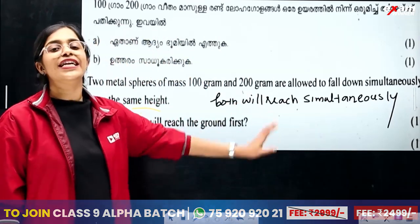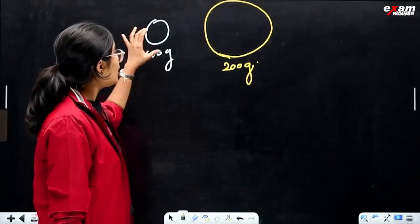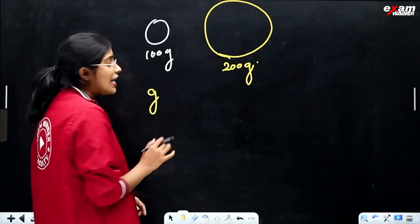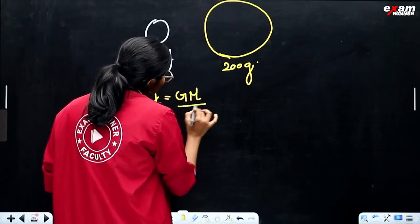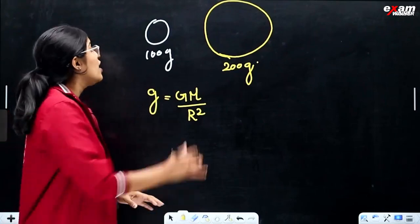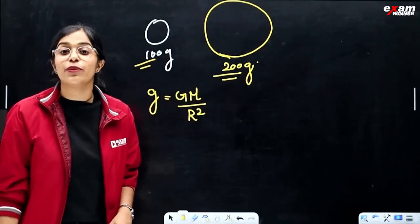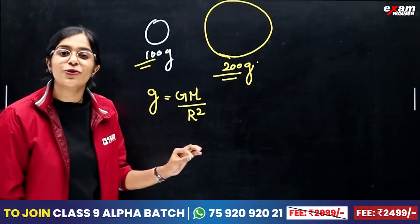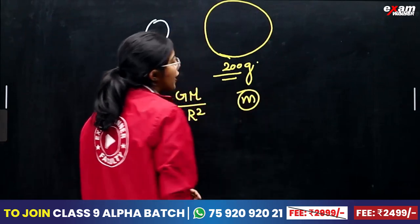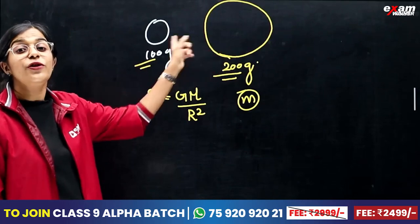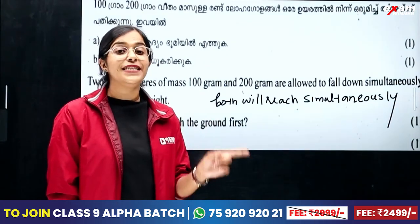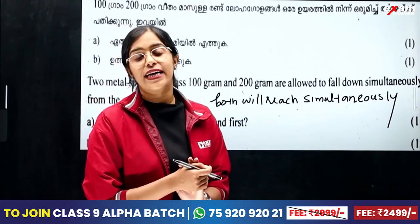What is the reason? The acceleration due to gravity is given by g equals G times M divided by R squared. Acceleration due to gravity is not dependent on the object's mass — it is independent of small m, the object mass. Therefore, both spheres will reach the ground simultaneously regardless of their masses.